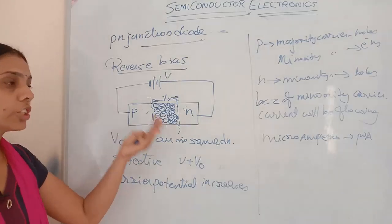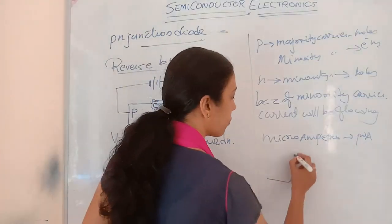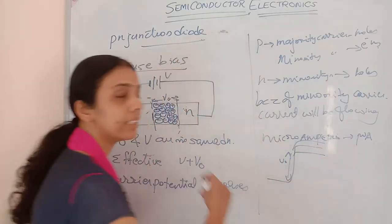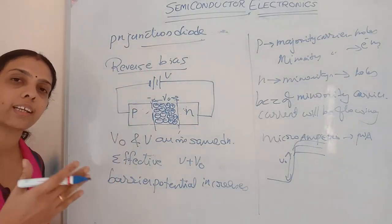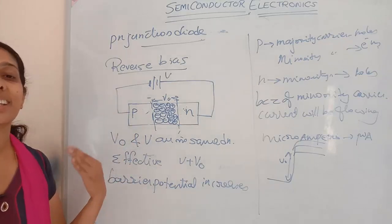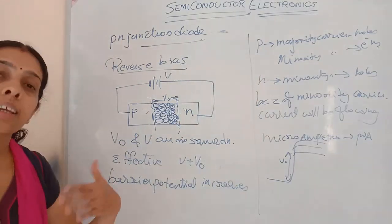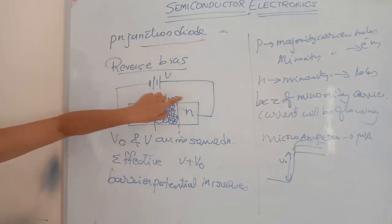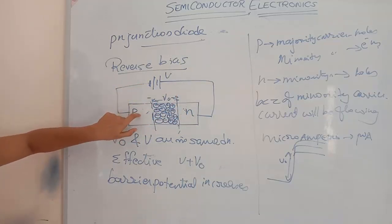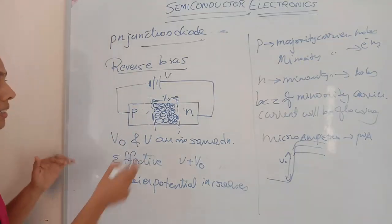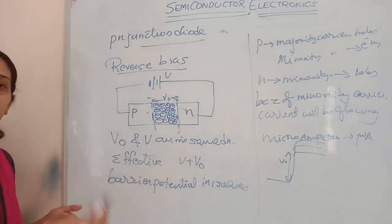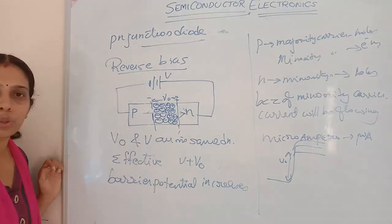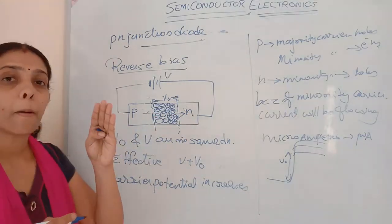As we apply more external voltage, the barrier potential increases correspondingly. Minority carriers continue to shift, and negative charges accumulate on the P-side while positive charges build up on the N-side. After a particular voltage, more current suddenly starts flowing through the system — this is called the breakdown voltage.